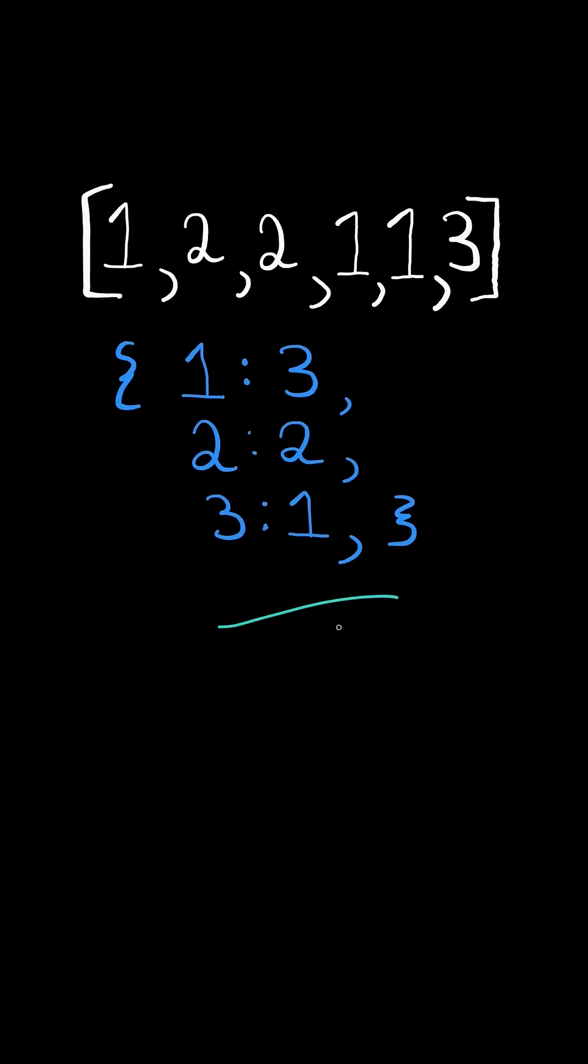First, we iterate through the list and create a frequency map, mapping the element to the number of occurrences.